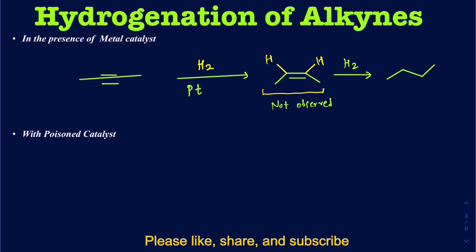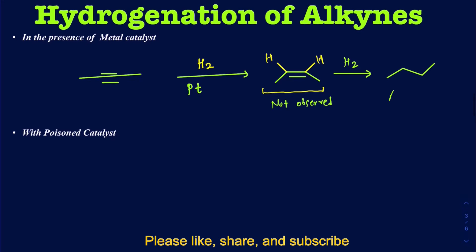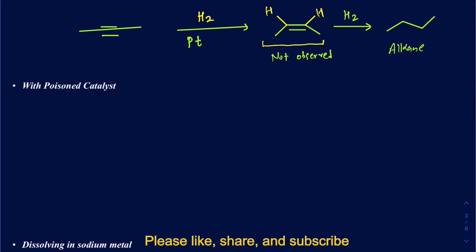Usually the alkene is not observed, even if you're very careful with the equivalency of hydrogen you're adding — there's still going to be a chance you'll have a mixture of alkane and alkene. It's not a very efficient way of making alkenes from alkynes. Anytime you use H₂ in the presence of metal it will take the reaction all the way to an alkane. So the question is: how do you really stop this reaction at an alkene?